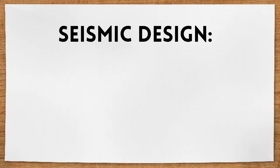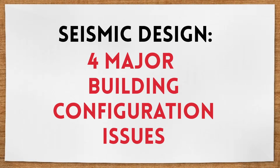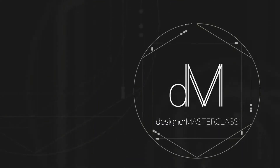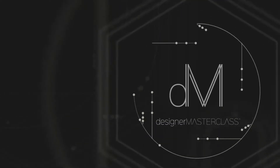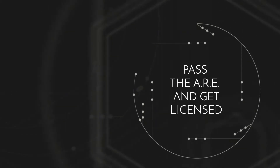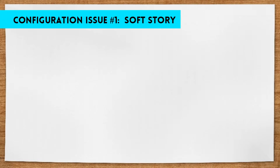When it comes to seismic design, there are certain design features that can put a building at serious risk. In this video, we'll go over the four major configuration issues. There are four major configuration issues in building design that can put a structure at risk during any seismic activity.